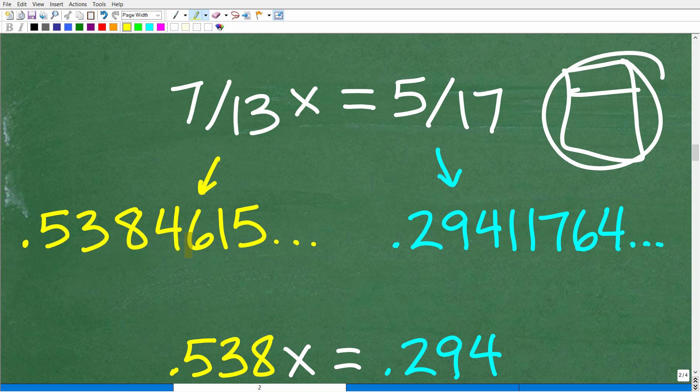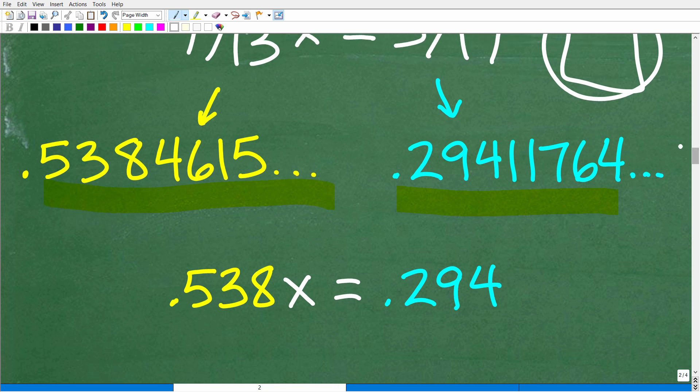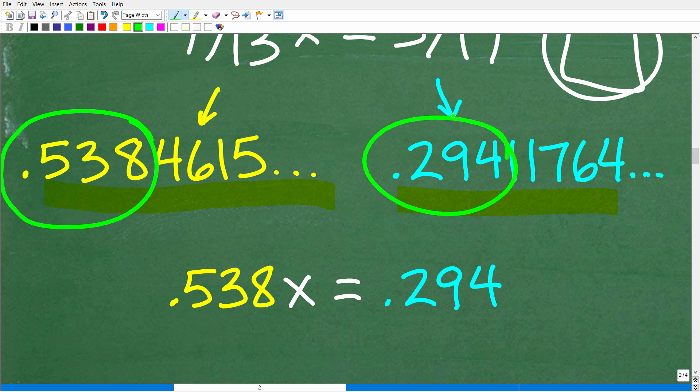They just start turning these things into decimals. So 7 divided by 13 is going to be the decimal 0.5384615. This goes on and on and on. 5 over 17, if you turn that into a decimal, you're going to get 0.29401764. So what students would do, they'll change their fractions into decimals and then they will round off. They'll be like, alright, let me see here. I'm definitely not using all of this. Maybe I'll just take the first three decimals here and the first three decimals here, place values, 0.538x is equal to 0.294.